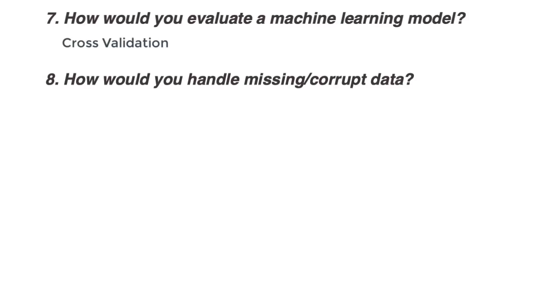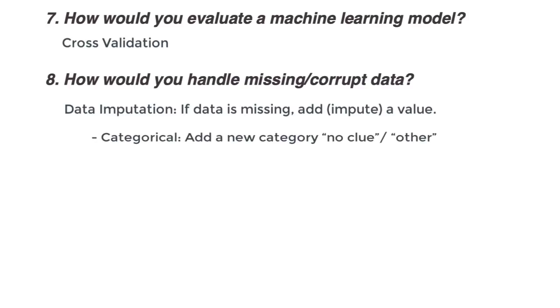How do you handle missing or corrupt data in a dataset? To deal with missing values, we could perform data imputation. The big idea is that if there is data that is missing, you add a value. But that data can be of different types. For categorical values, you can add a new category, like no clue or other. For numeric types, you can impute with zero and add an indicator variable showing that the value is missing. The model will compute it for you.